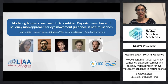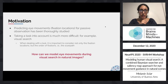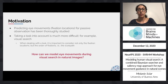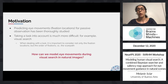Predicting eye movements for passive observation has been thoroughly studied, but when we take a task into account, it becomes much more difficult. People will fixate on different points in the image depending on whether they're free-viewing or doing a task, and which task they're doing — for example, visual search. When dealing with a task, it is important to consider not only the fixation locations but the order of those fixations — in other words, the scan path.